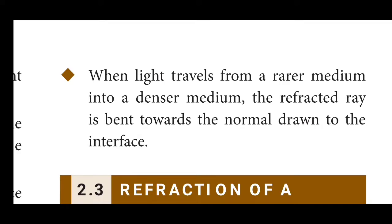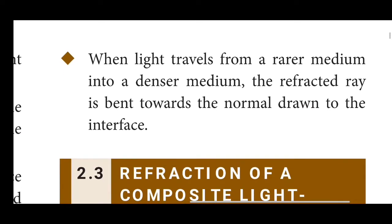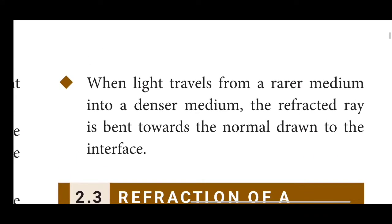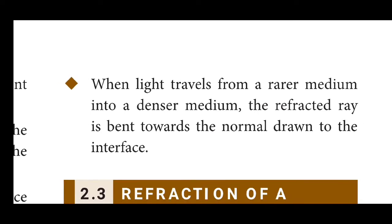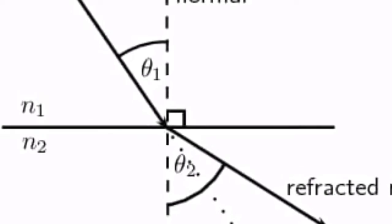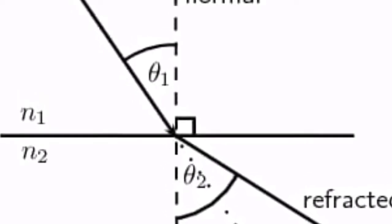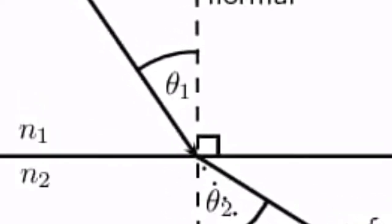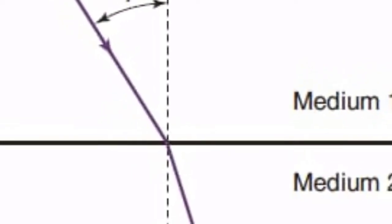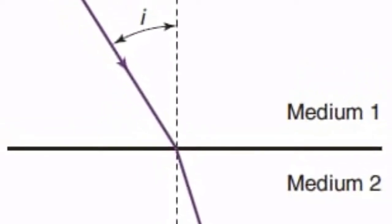We have talked about the law of reflection and the law of refraction and the mediums. Let's look at the diagram. If the ray is bent, it can be in a rarer medium — we go and bend towards the normal.